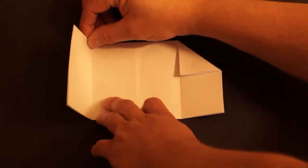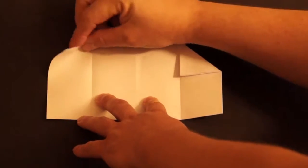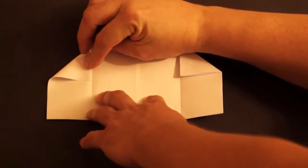Do the same thing with the other half. Put this top edge and fold it so it lines up down this first crease.